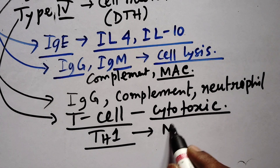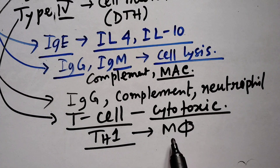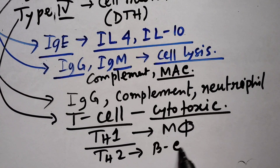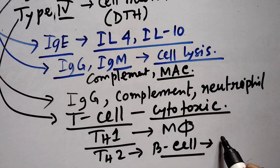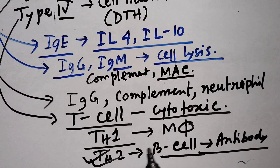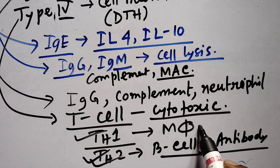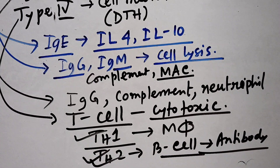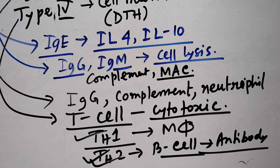In Type 4 hypersensitivity, TH2 also plays a role alongside TH1. In a normal case, TH1 will not cause hypersensitivity. The response involves antigen-antibody interaction or B-cell antibody involvement.